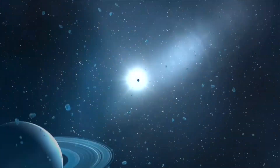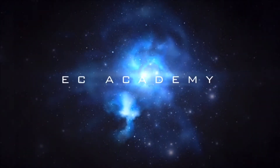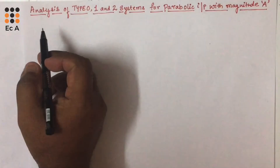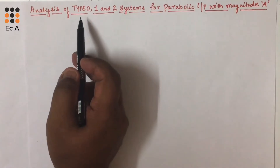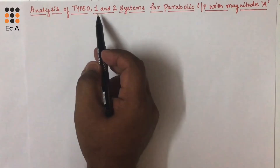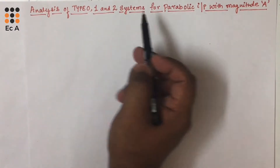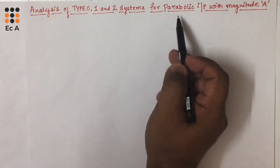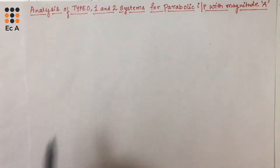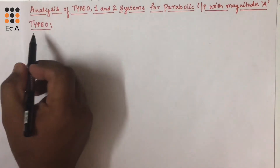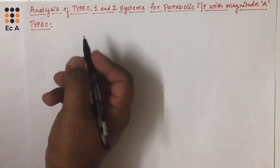Hello friends, welcome to EC Academy. In this lecture, let us understand the analysis of type 0, type 1, and type 2 systems for parabolic input with magnitude A. First, let us consider type 0 system.